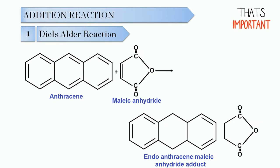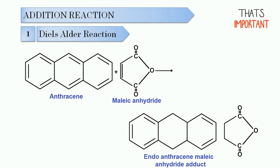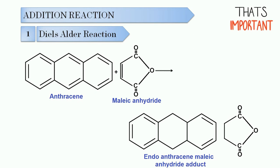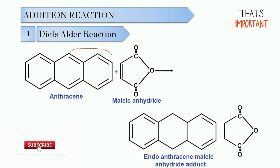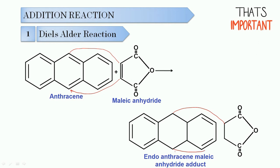The next category is addition reactions. Anthracene undergoes addition reactions much more readily than naphthalene. The first is the Diels-Alder reaction. Anthracene reacts with maleic anhydride to form a 1,4-addition product, which is 9,10-endoanthracene-maleic anhydride adduct. Bond formation occurs at position number 9 and position number 10, giving this endo-anthracene maleic anhydride adduct.